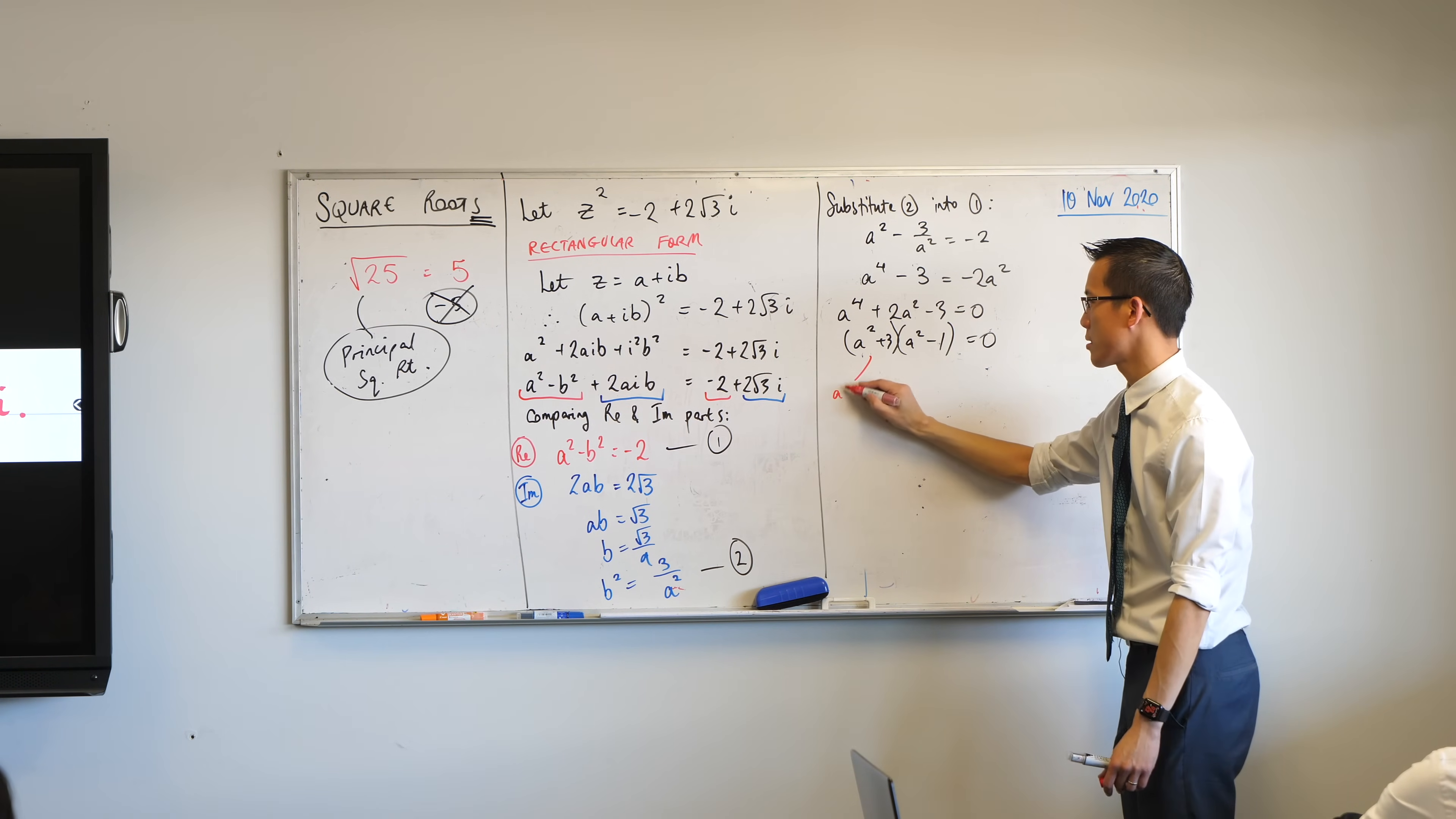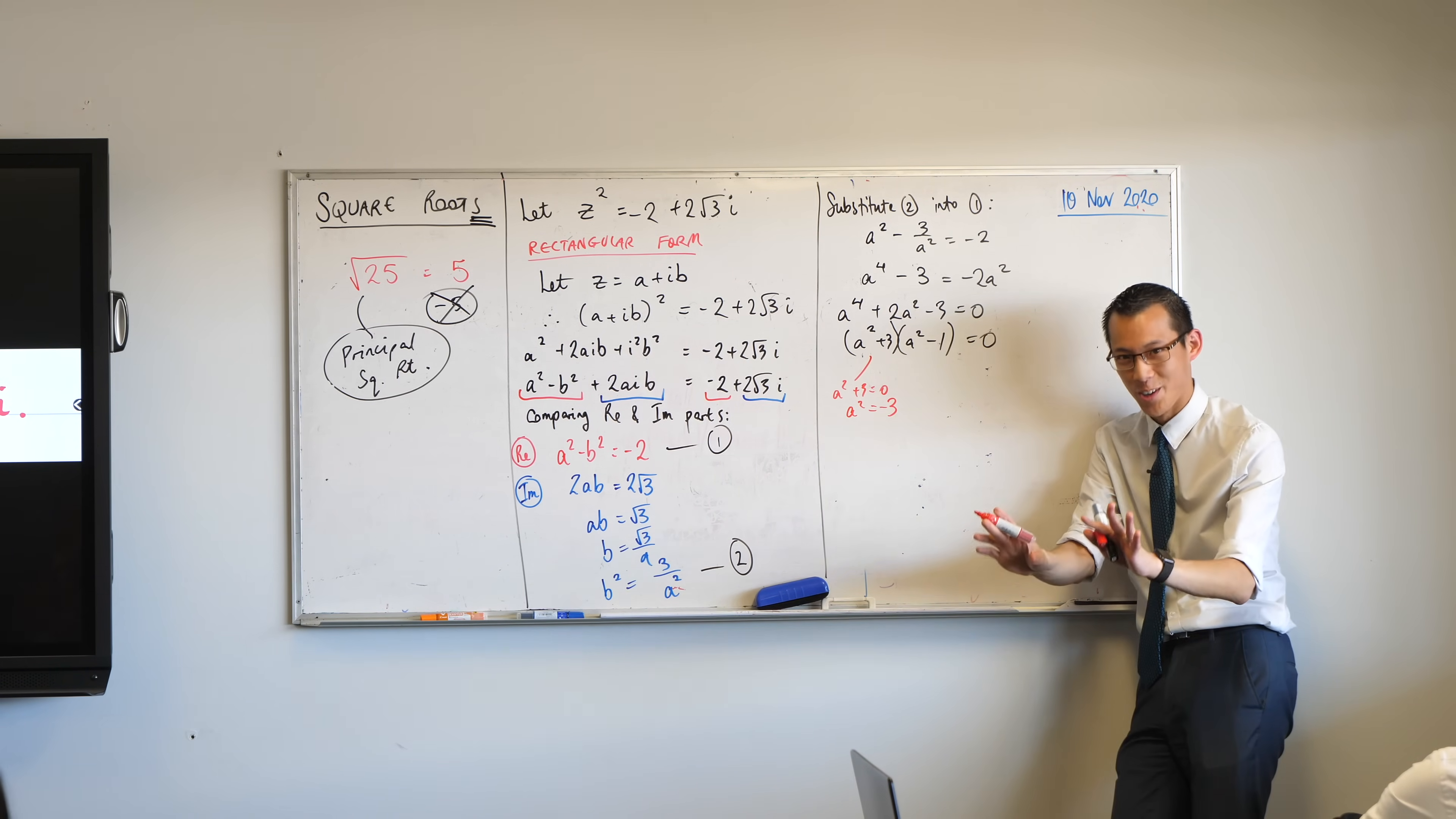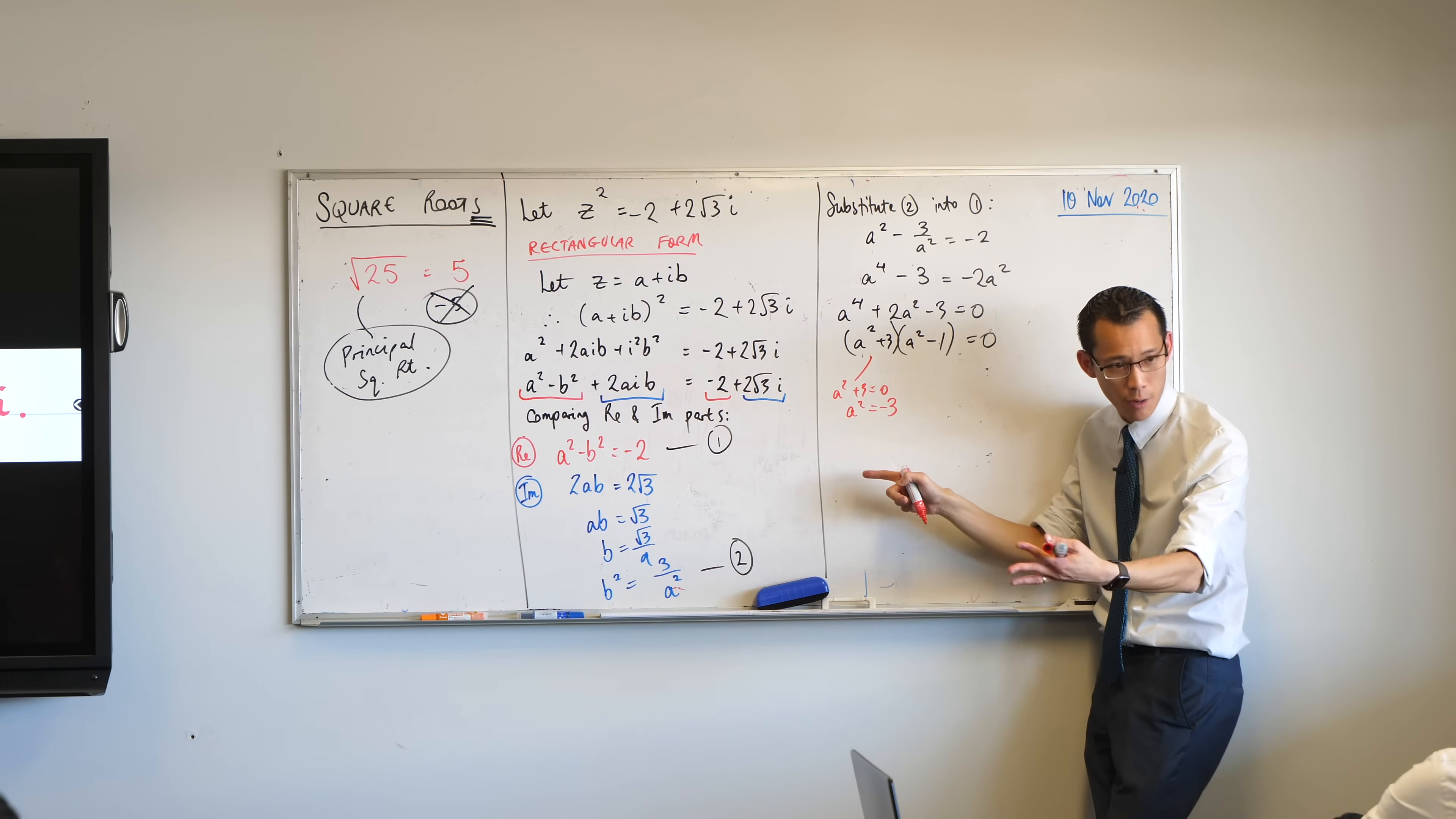Now, I could try and make this equal to zero. But just pause for a moment before you start thinking, I can do complex numbers. I know what to do with this. Just pause. Because what is a again? What is it? a is the real part of my complex number. So it had better not be imaginary itself. Does that make sense?